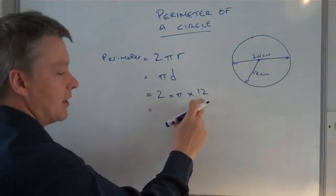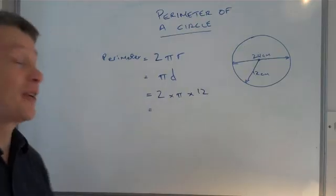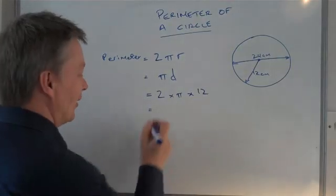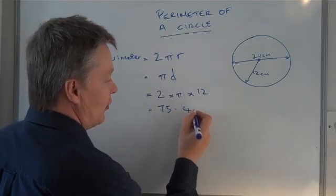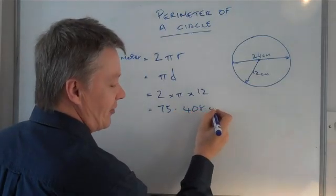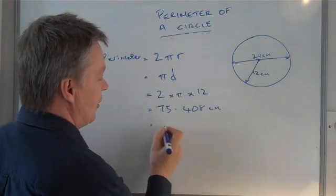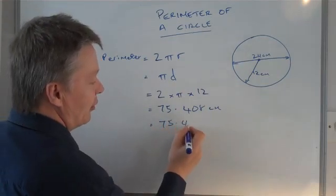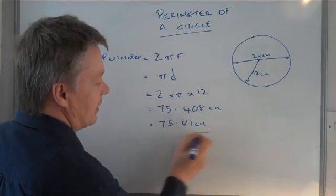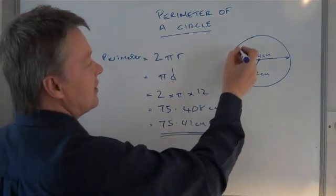So 2 times pi times 12, using my calculator, which I did a little bit earlier on, is 75.408 centimeters. So 2 decimal places, that would be 75.41 centimeters. So what we've done is worked out the